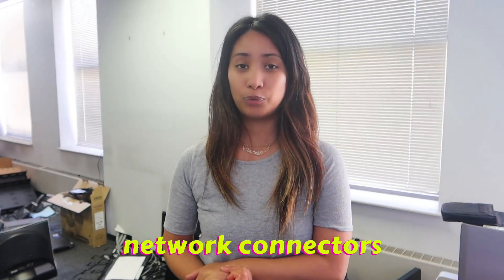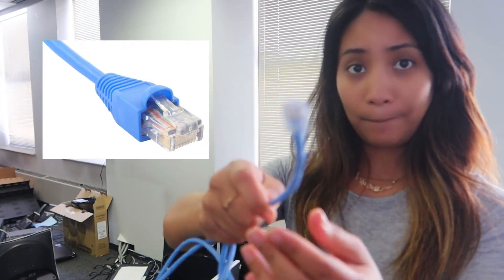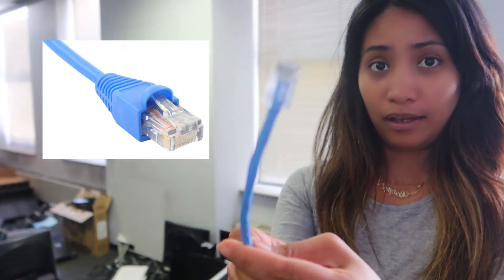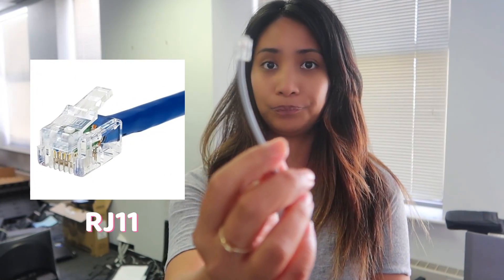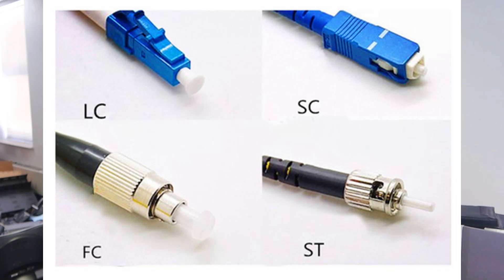Now let's move on to the different network connectors we often use in the workplace. The most common ones are RJ45s, which are used for Ethernet cables — these are probably the ones you're most familiar with. We also use RJ11 for phones, which are smaller. If you're using fiber in your workplace, the network connectors for fiber cables are called ST, SC, and LC.